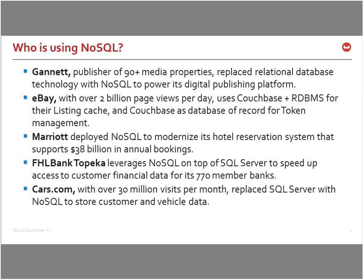eBay took a different approach. They said, for token and session management, NoSQL makes sense in a key-value database. But their listing services — where people create and edit listings with expiration dates — remained in relational. What they really needed was something to accelerate search query performance, so they combined relational and NoSQL with Couchbase as a query front end to boost listing search performance.